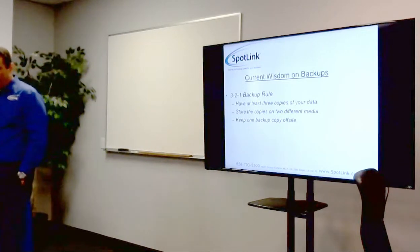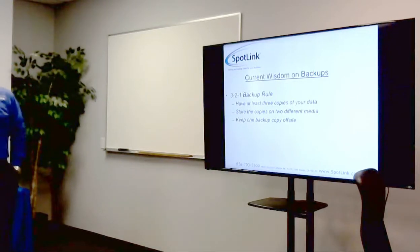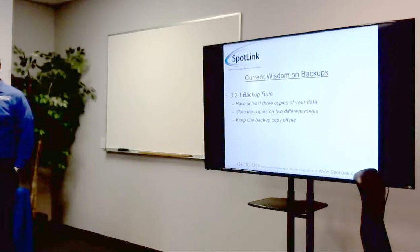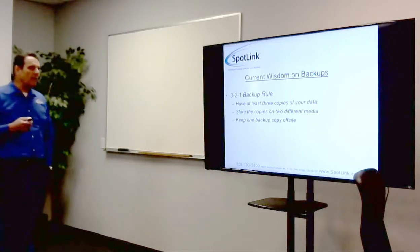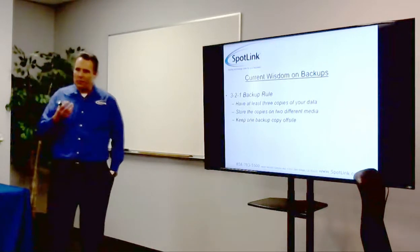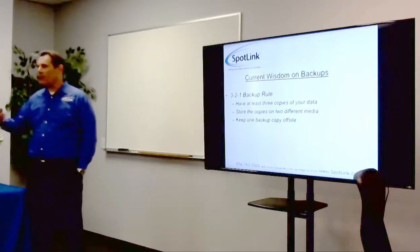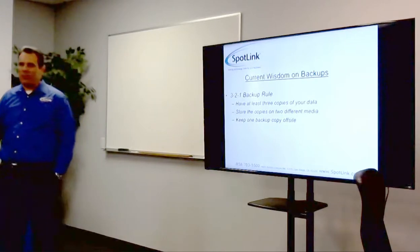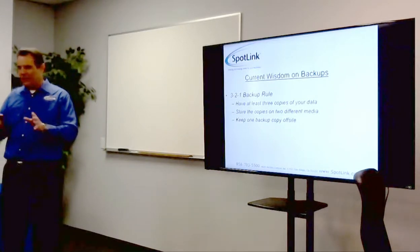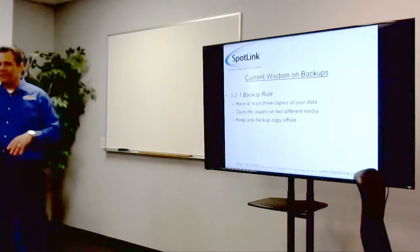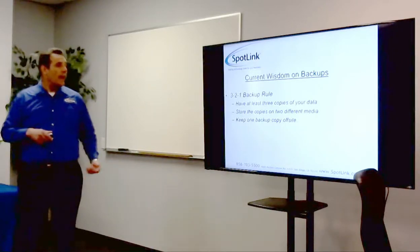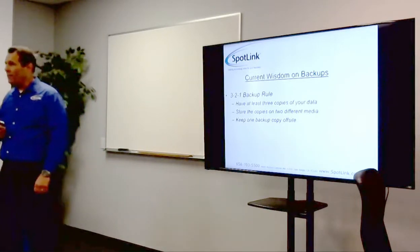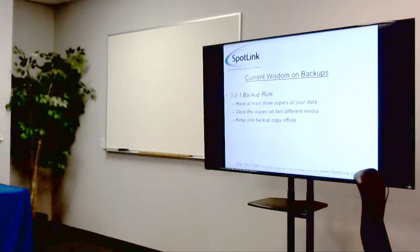The current wisdom on backups is the 3-2-1 rule: have at least three copies of your data — your primary, a backup, and a backup of your backup. Store copies on two different media so you don't have both on the same hard drive. And when you can, keep one copy off-site so that in a site-level disaster, you can still get to it.